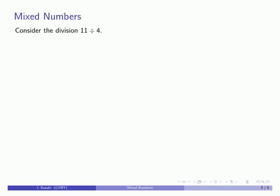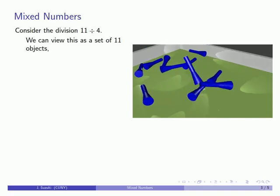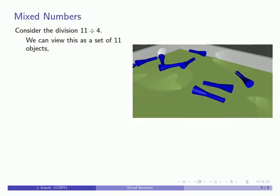So, for example, let's consider the division 11 divided by 4. And so for that, I'm going to take 11 objects, so for example, 11 flashlights.